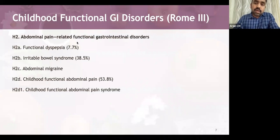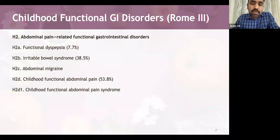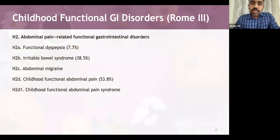H2 covers functional gastrointestinal disorders involving abdominal pain. These are further classified into functional dyspepsia, irritable bowel syndrome, abdominal migraine, childhood functional abdominal pain not otherwise specified (NOS), and childhood functional abdominal pain syndrome. The most common is childhood functional abdominal pain NOS, which contributes the majority of functional abdominal pain cases, followed by irritable bowel syndrome and functional dyspepsia.